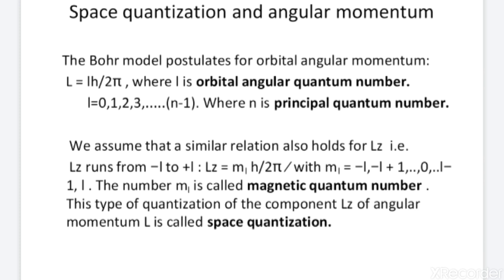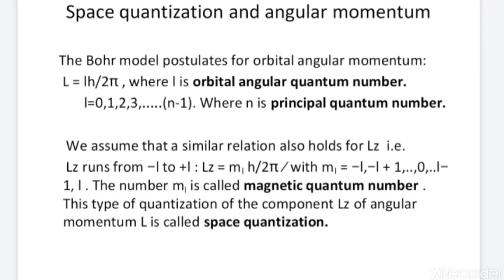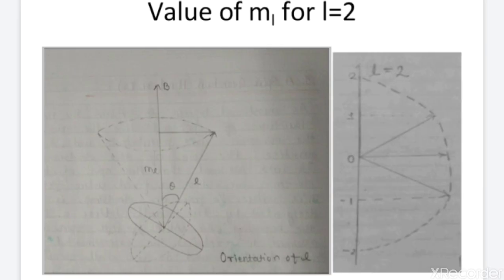So we can write Lz equals ml times h-bar, where ml is the magnetic quantum number. The value of the magnetic quantum number varies from minus l to plus l, which includes 0, giving a total of 2l+1 values. Only fixed orientations of projections are allowed — this phenomenon is known as space quantization. From the diagram, for L equal to 2, we have 5 values of ml: minus 2, minus 1, 0, 1, and 2.